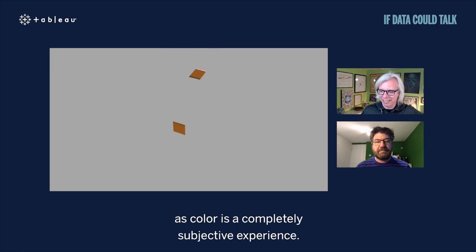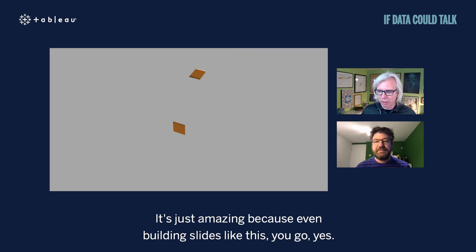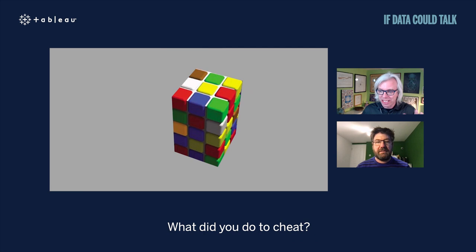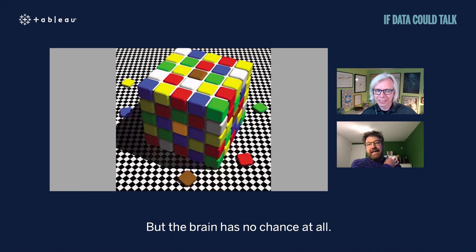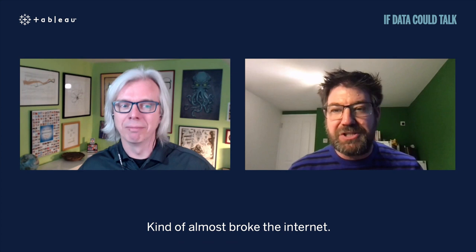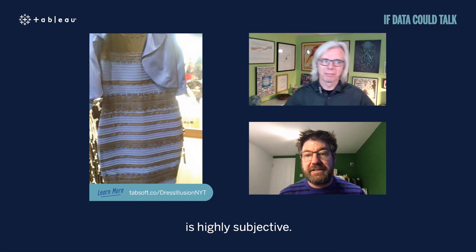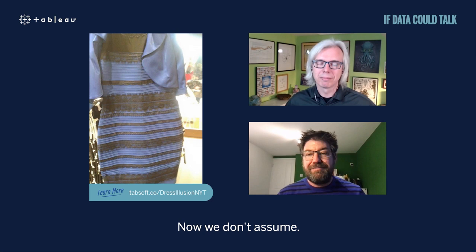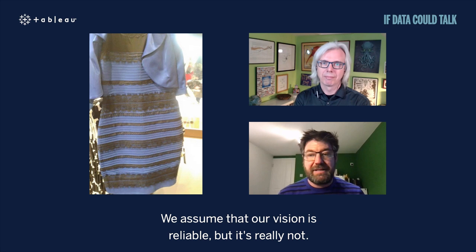Many of you will remember the dress illusion that swept the internet — again illustrating that our perception of color is highly subjective. Some of you will see the lines as gold, others as black. We assume our vision is reliable, but it really isn't.